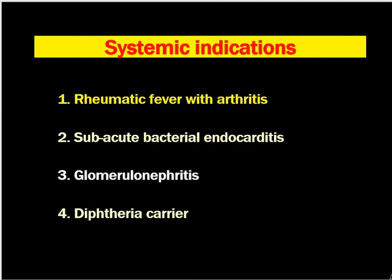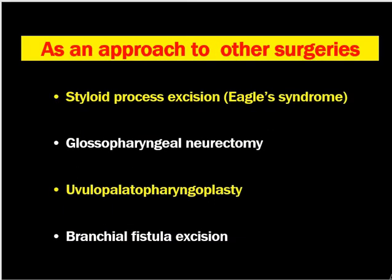There are certain systemic indications for tonsillectomy, but nowadays they are not very common and we do not commonly perform tonsillectomy for these. They include rheumatic fever with arthritis, subacute bacterial endocarditis, glomerulonephritis, and diphtheria carrier. Tonsillectomy can also be carried out as an approach to other surgeries, such as styloid process excision in Eagle's syndrome, uvulopalatopharyngoplasty where the tonsil is removed along with other palate structures, and branchial fistula excision where the fistula opening lies on the tonsillar bed.